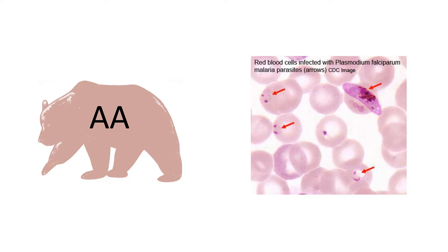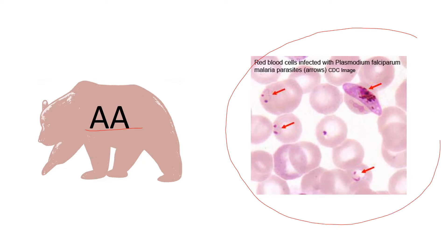Papa Bear here has two alleles for the wild type hemoglobin protein, so he only produces wild type hemoglobin protein. While this results in normal healthy red blood cells, they are also highly susceptible to infection by Plasmodium falciparum, or malaria. This susceptibility is what natural selection is going to act on.